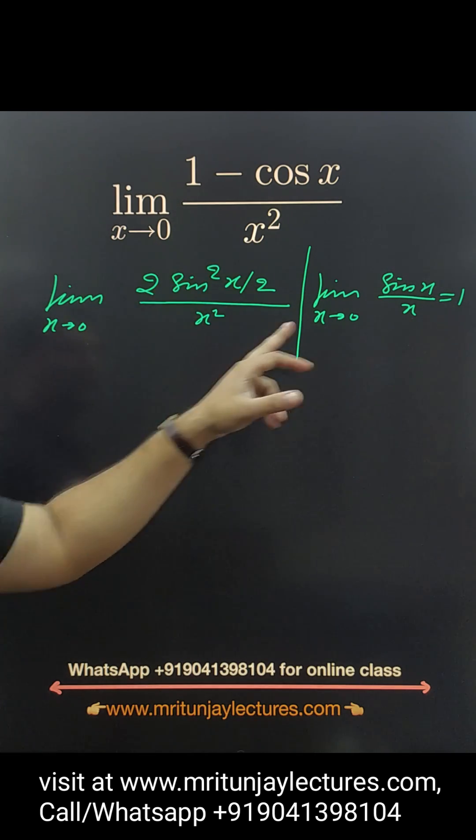So what about that value? Simply 1 by 2, and sin x by 2 upon x by 2. If x tends to 0, that value is 1. So final answer is 1 by 2 is the right answer.